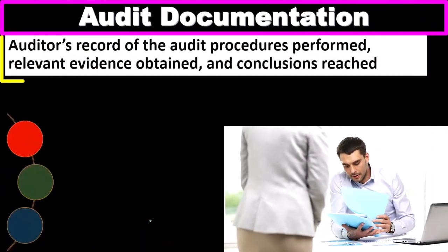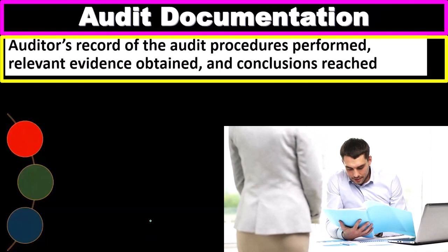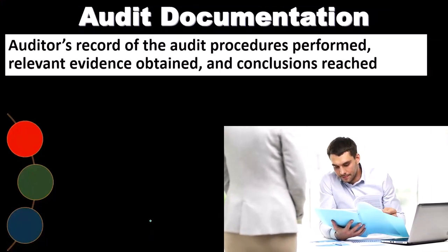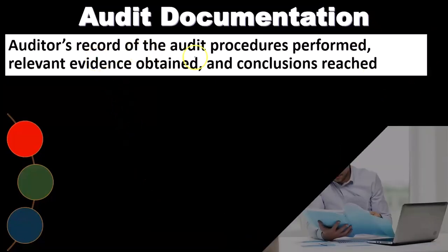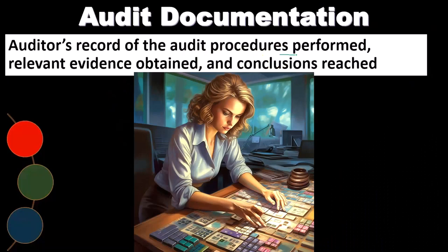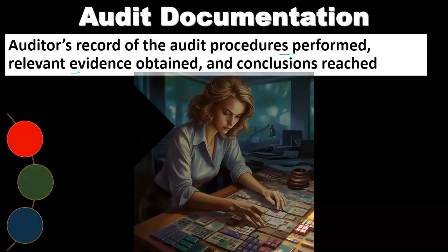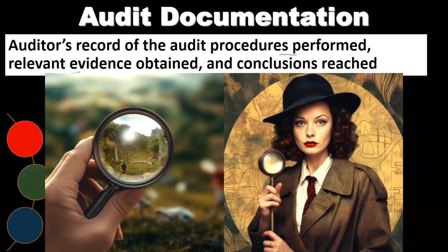Audit documentation is the auditor's records of the audit procedures performed, relevant evidence obtained, and conclusions reached. The audit documentation tells us what we actually did within the audit in order to get evidence for the assertions being made or for the opinion that we give on the financial statements. We document the evidence that is obtained, and the conclusion that we reach will be based on that evidence — we go where the evidence leads.